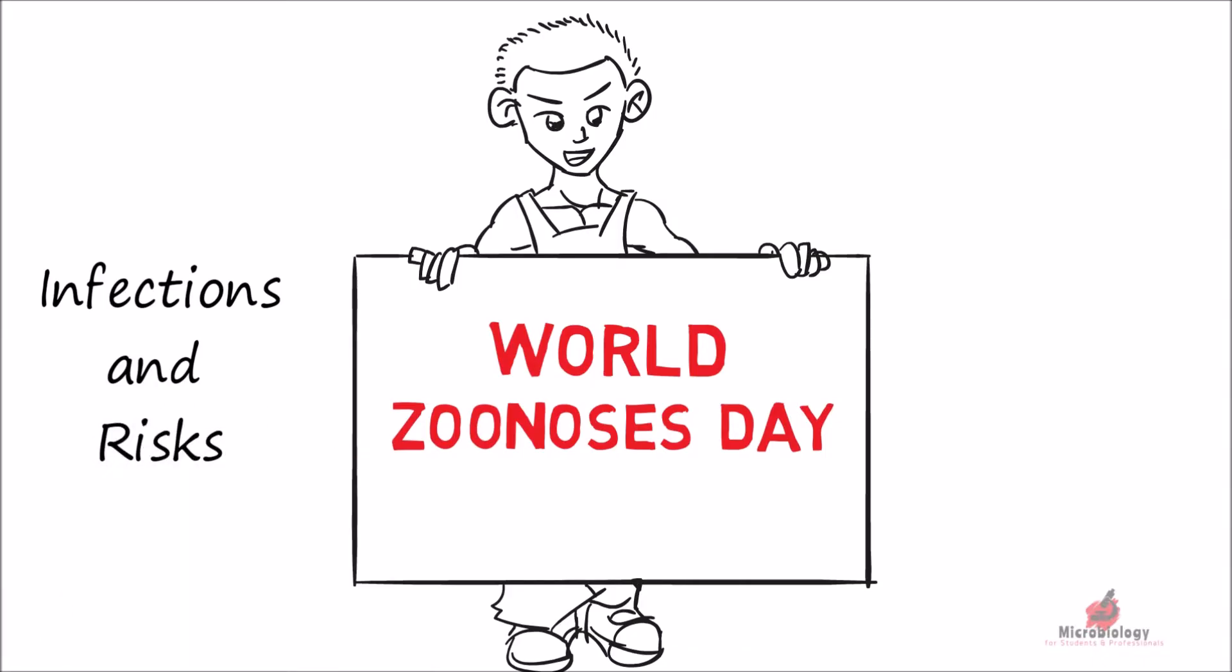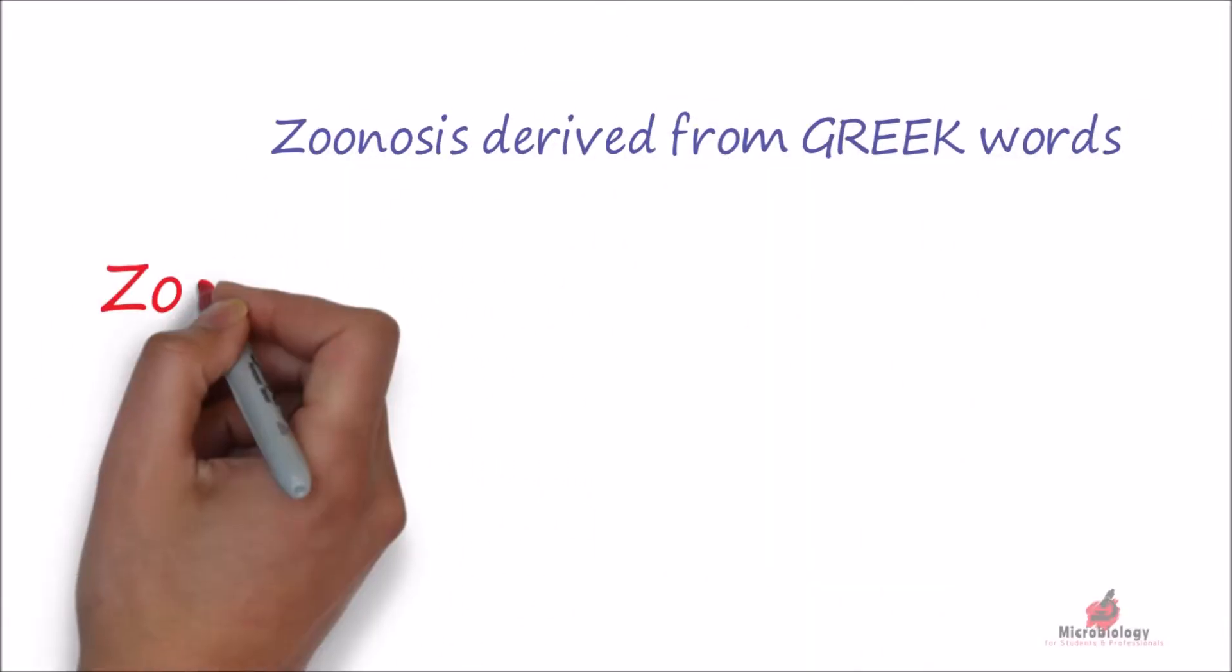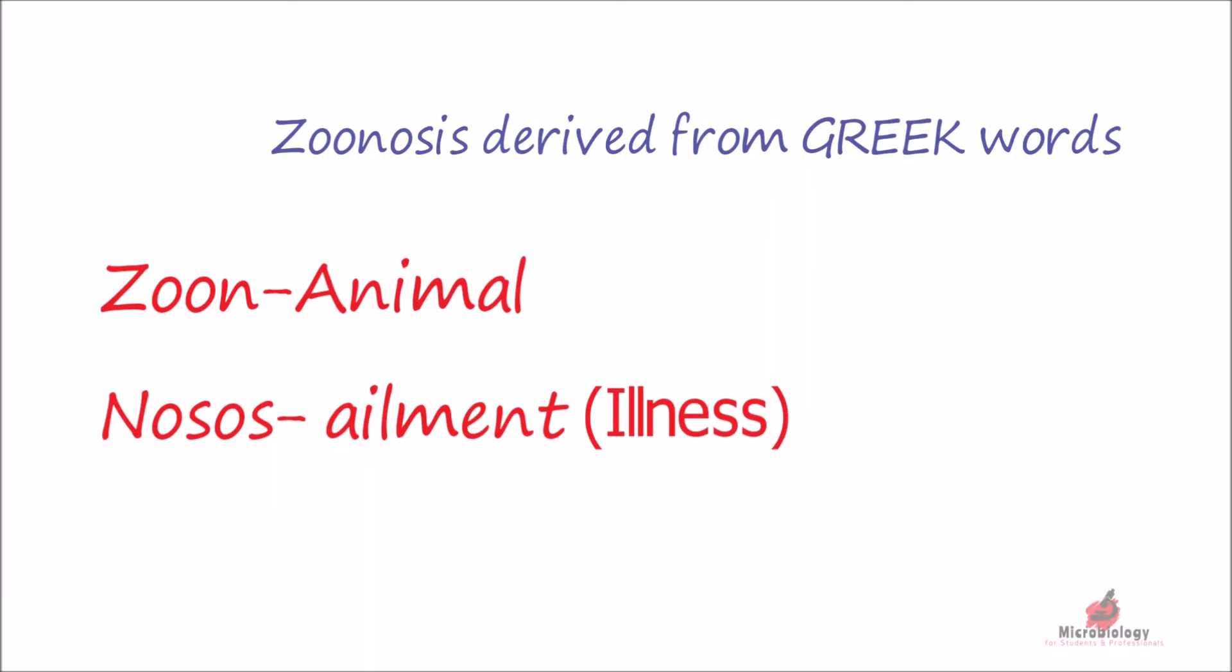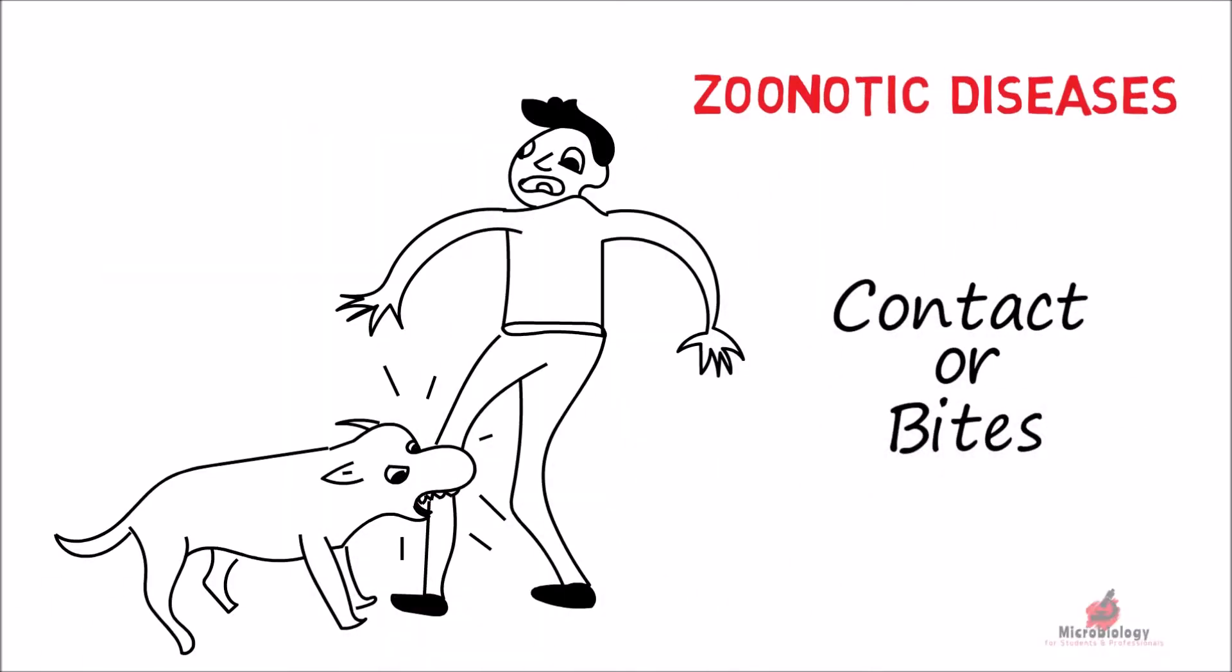About 150 types of zoonotic diseases are known to exist. Zoonosis is derived from Greek words. People may get zoonotic diseases by contact or bites of domestic and wild animals.